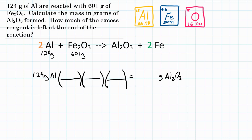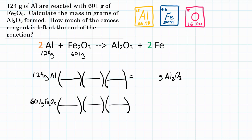We'll set up three fraction bars, and then do a second problem with the other amount — 601 grams of Fe₂O₃, also being mass — we're going to do three steps and convert as well to grams of Al₂O₃. Whichever one gives us the lesser amount of Al₂O₃ is what we will actually get. Starting with the first problem, we convert 124 grams of aluminum to grams of Al₂O₃. Our first step uses the molar mass.